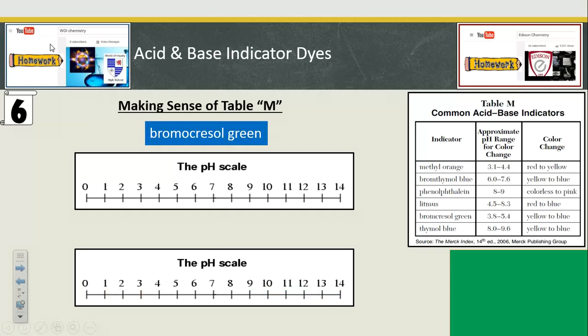Bromocresol green. Well, below pH 3.8, it's yellow. And above pH 5.4, it's blue. And in the middle of the range, yellow and blue mix to get green. So, that's why it's got bromocresol green in its name.